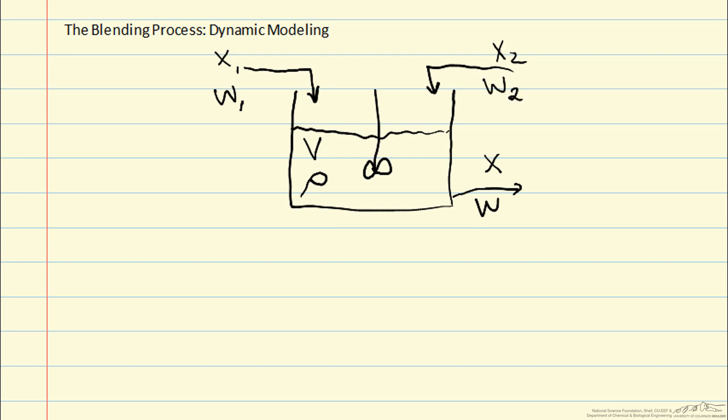For this particular control problem we are interested in controlling the mass fraction X. That is our control variable or CV and we're not going to be able to influence stream 1. That is coming from some upstream process so that is our disturbance variable or DV. But we will use stream 2 to manipulate the process. W2 in particular the mass flow rate will be our manipulated variable or MV.